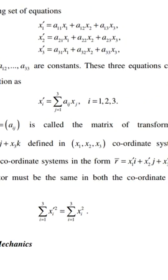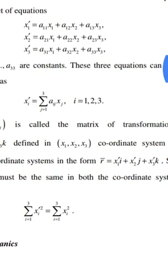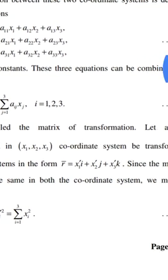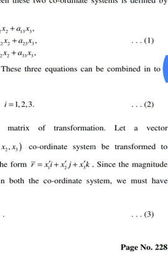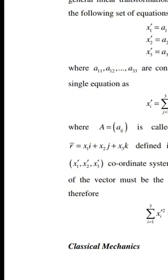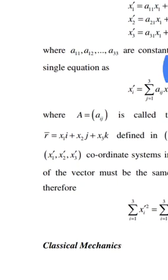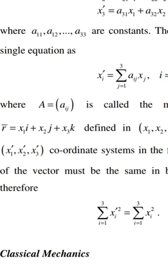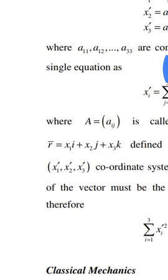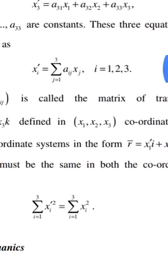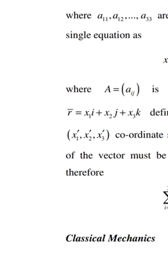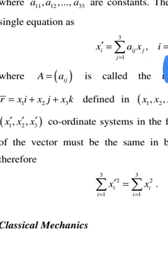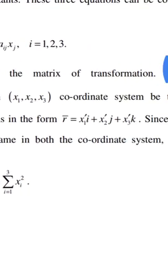These three equations can be combined into a single equation as x_i' = summation of a_ij * x_j, where j = 1, 2, 3.